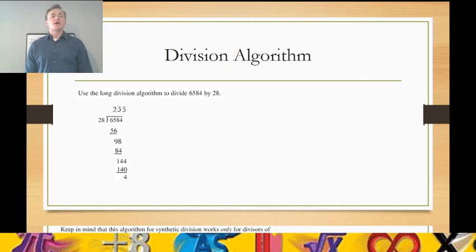Now what is this number? We see at the top, we get 235. But at the bottom, what happens there? We subtract and we get 4. There is no other digit to bring down, so 4 is our remainder.